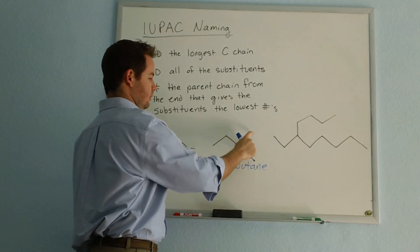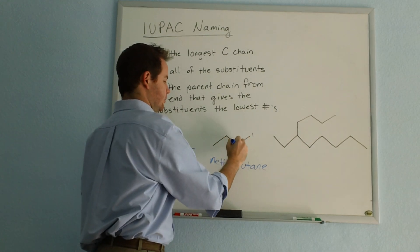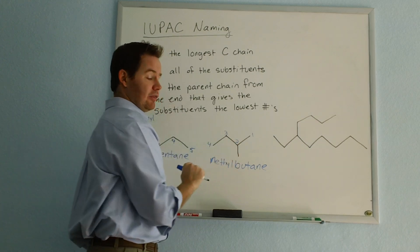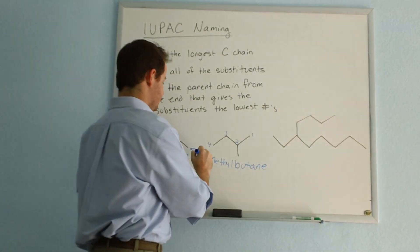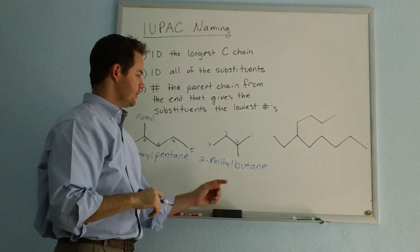or one, two, three, four. And that second version is what gives us the lowest number on that branch where the methyl branches off of our parent chain. So this will be a 2-methylbutane for this compound.